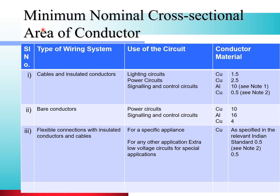As per NEC 2011, the minimum nominal cross-sectional area of the conductor is given in a table listing types of wiring system, use of circuit, and conductor material with cross-sectional area. For cables and insulated conductors used for wiring circuits: for power circuits using copper conductor, it is 2.5 mm². For signaling and control circuits using aluminum, it is 10 mm², and for copper, it is 0.5 mm². For power circuits, it is 1.5 mm².